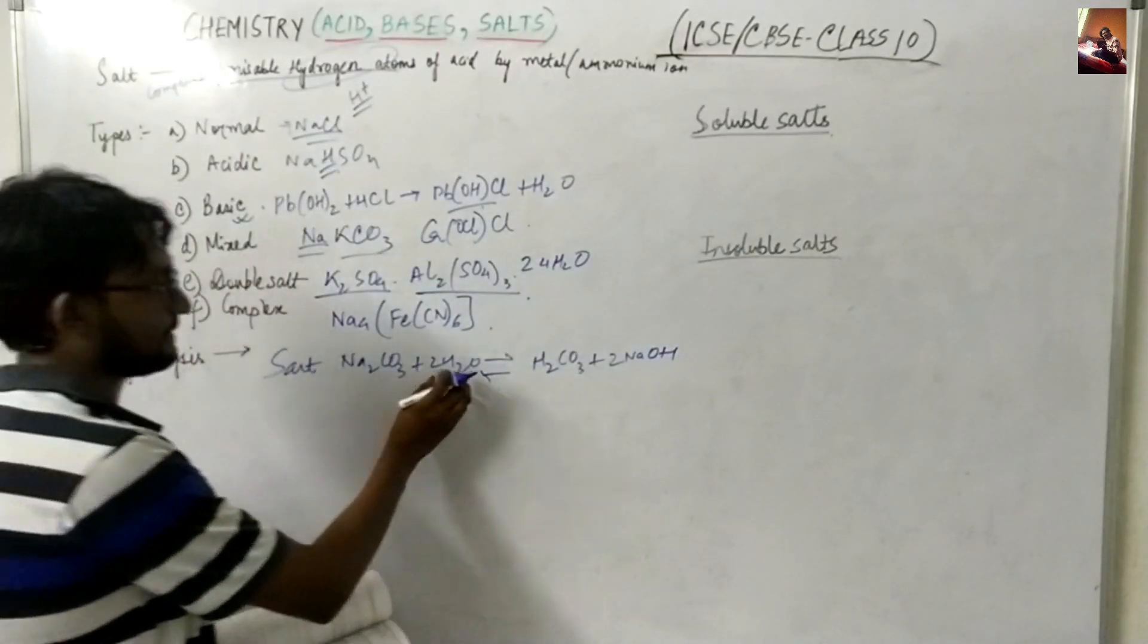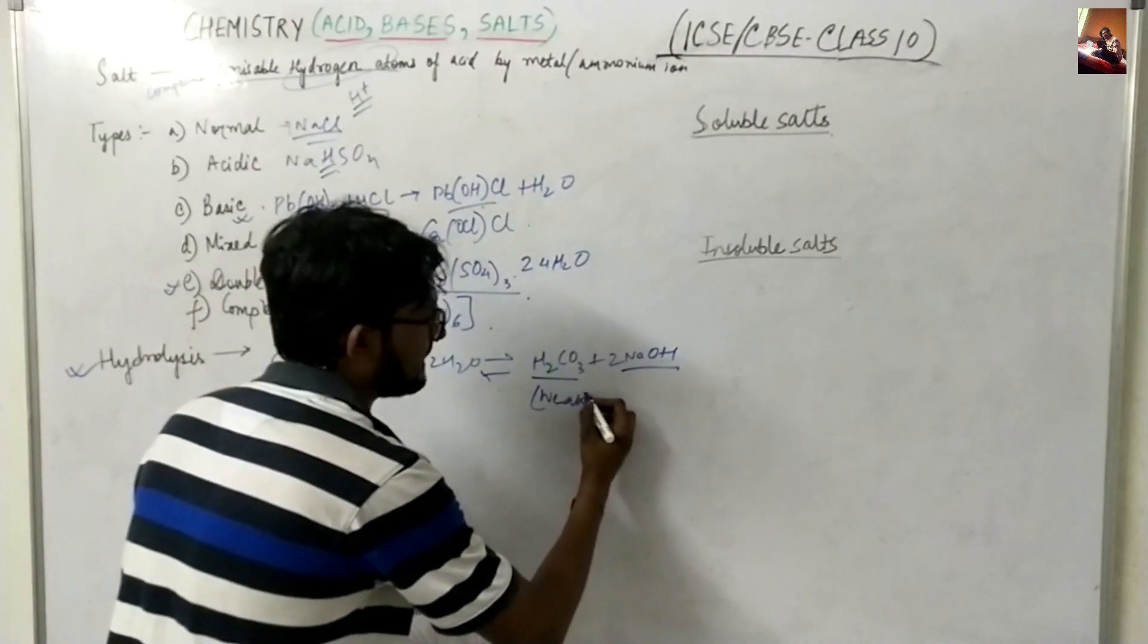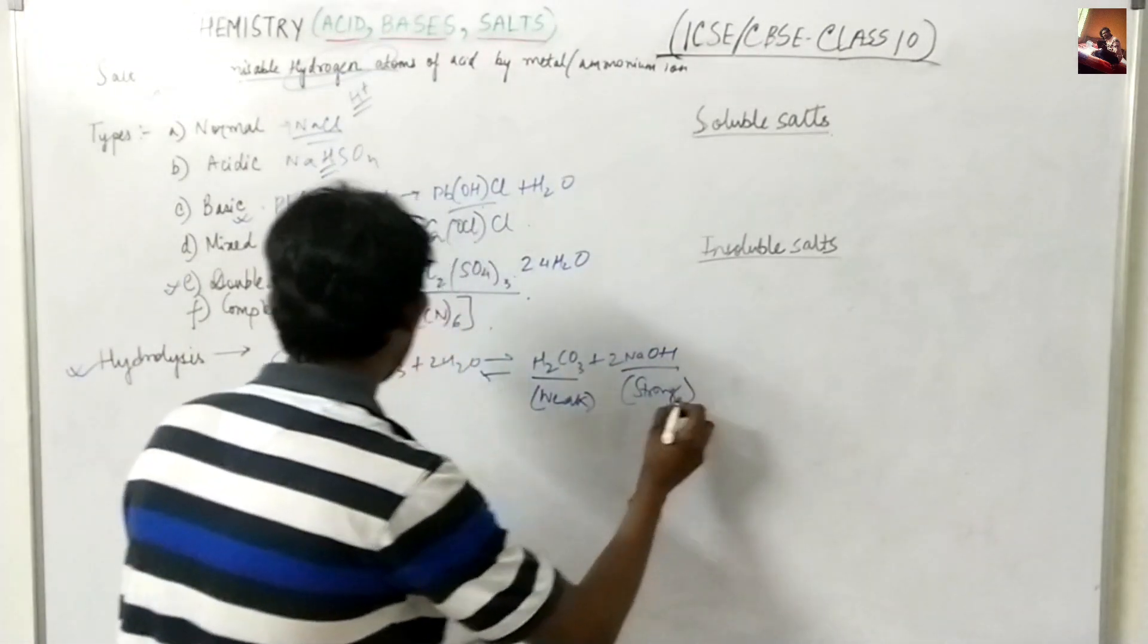Like a salt is reacting with water and it is forming an acid and a base. So this is a weak acid and this is a strong base. Remember this kind of example guys.